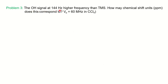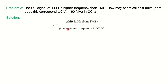Problem 2: An OH signal appears at 144 Hz higher frequency than TMS in a 60 MHz spectrometer. How many chemical shift units in ppm does this represent? Using the formula: delta = 144 Hz / 60 MHz = 2.4 ppm. This demonstrates that if you know the shift in hertz from TMS and the operational frequency, you can easily calculate the chemical shift value.